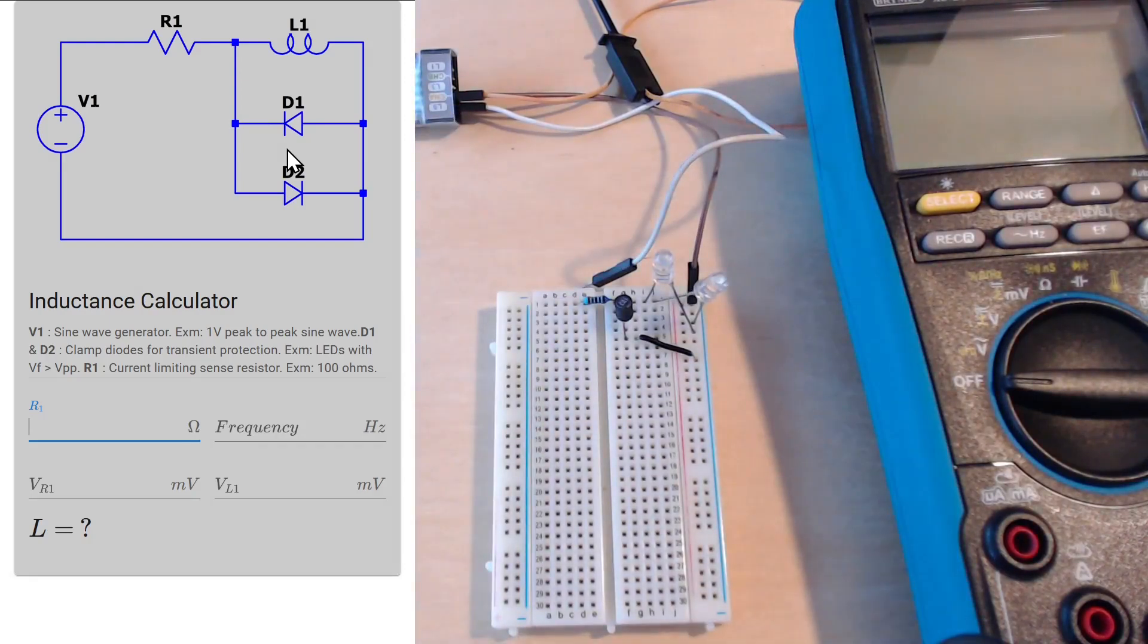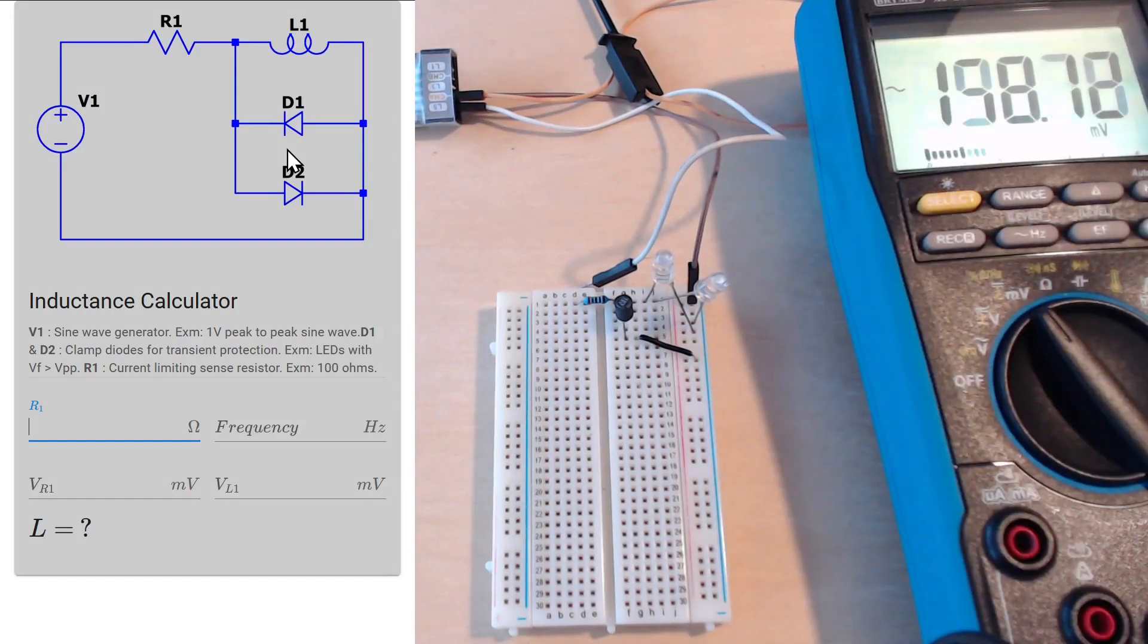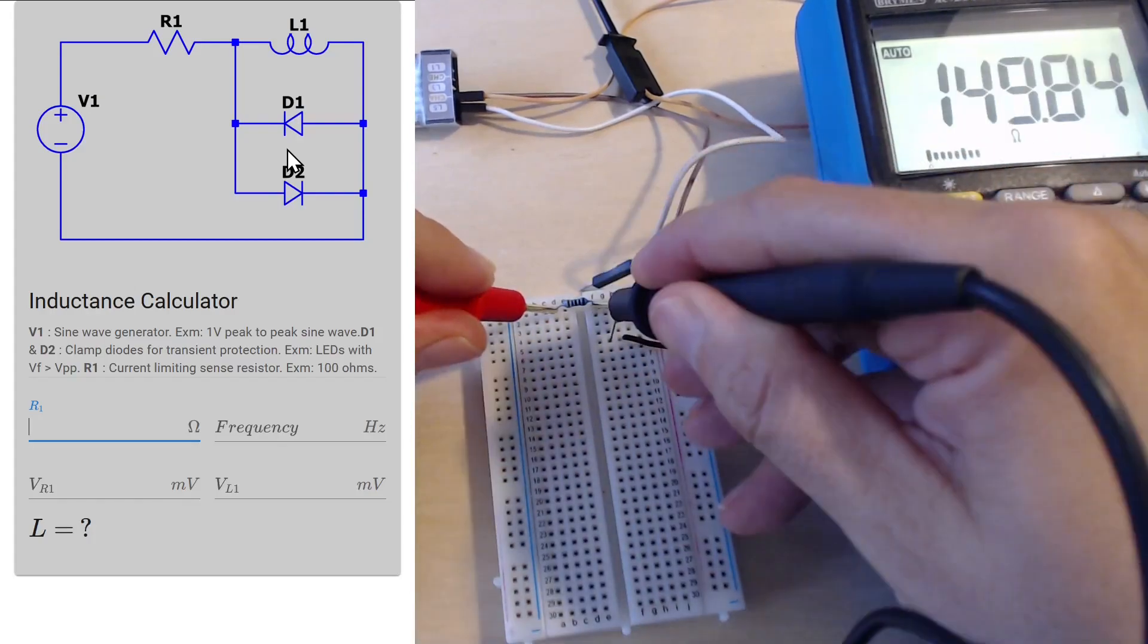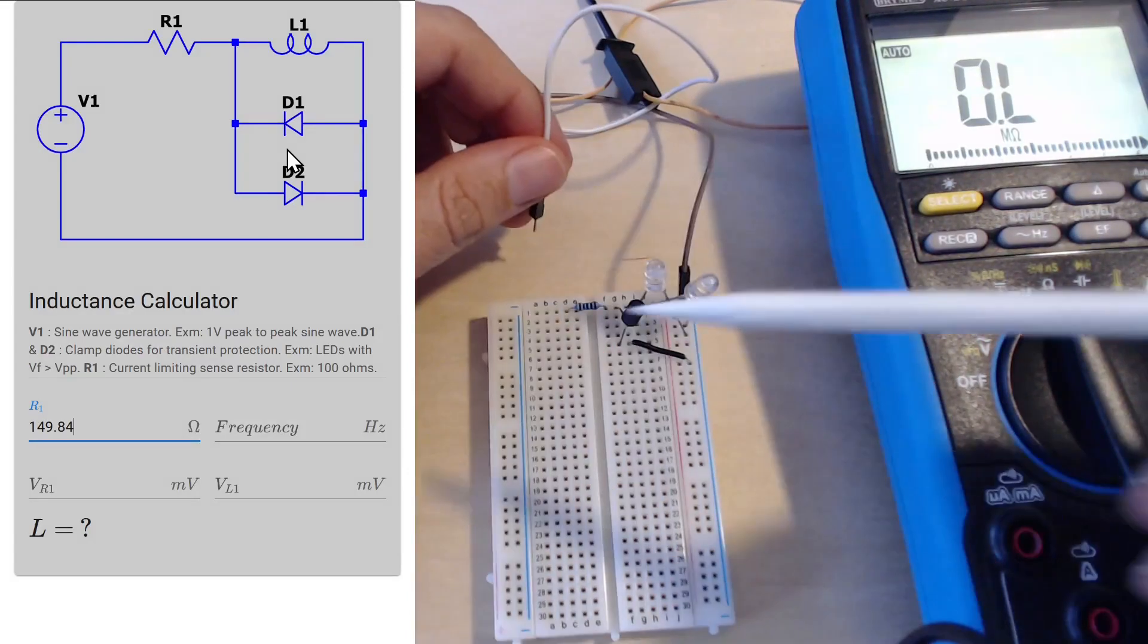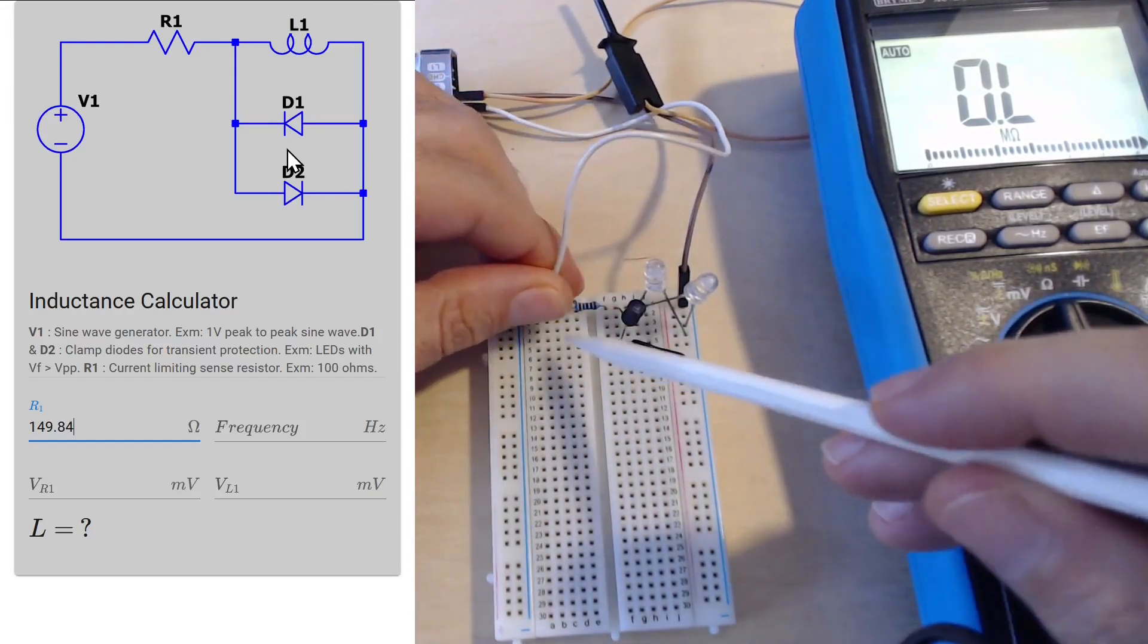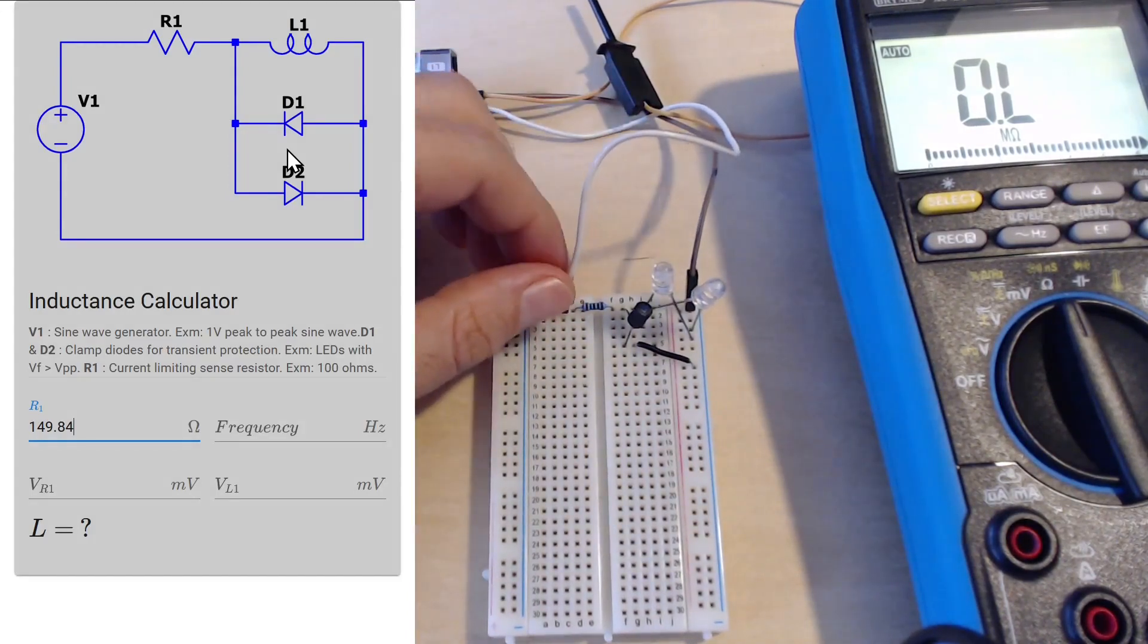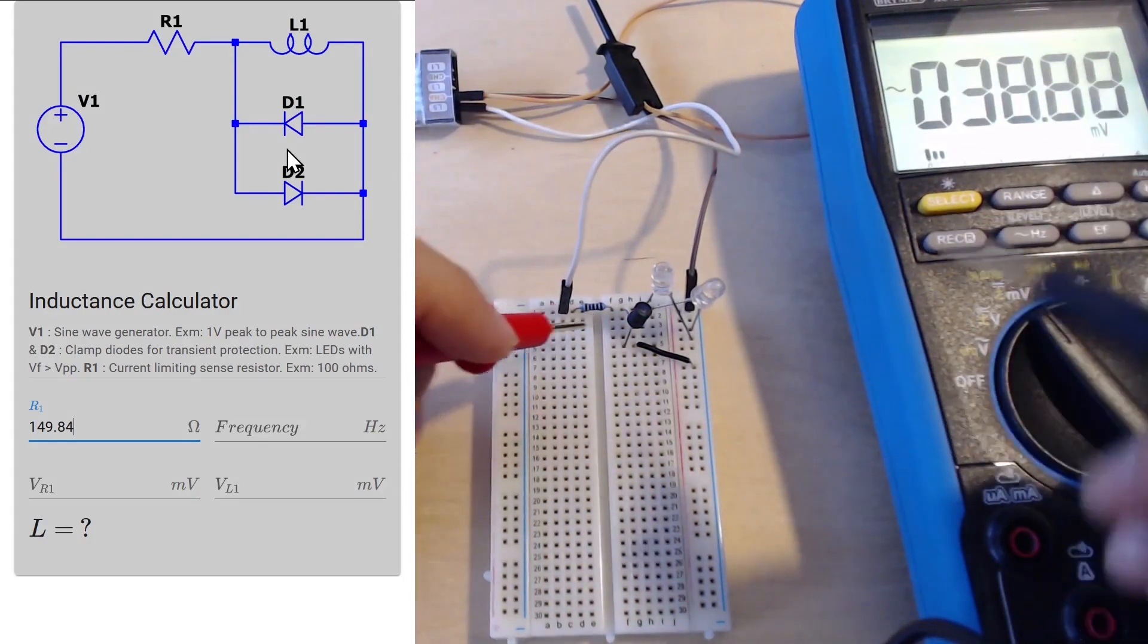Now before popping our signal generator in there, we will first want to measure our resistor. I know that this is 150 ohms but I want to get a more accurate read on it. Okay, it's 149.84 and I will just pop that into our tool. Now I know the actual value of our resistor. I can just pop in my signal generator there as well. As I told you before, this is a 10 kilohertz - we have a 10 kilohertz one volt peak-to-peak sine wave here.